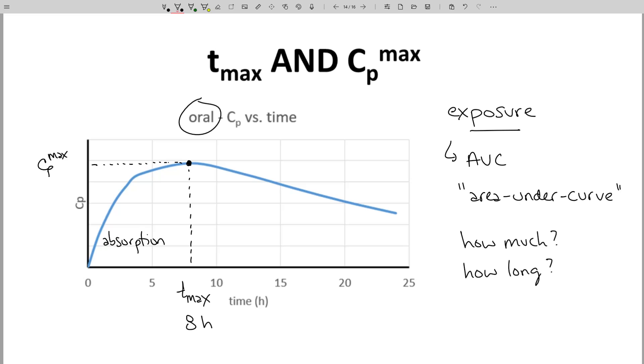CPmax, on the other hand, is an instantaneous glimpse into how much. Tmax tells you when the how much occurs.